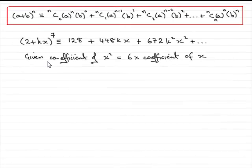Now, this next part, we're told that the coefficient of x squared is equal to six times the coefficient of x in this expansion, and asked to find the value of k.